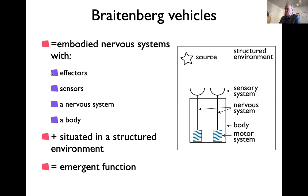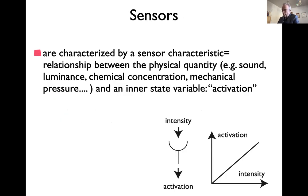These four elements are an abstraction of what an organism is: an embodied nervous system with effectors, sensors, a nervous system, and a body. The nervous system couples them at a neural level; the body couples them at a mechanical level. The whole thing is embedded in an environment, and only if it is embedded in the right environment does meaningful behavior emerge.